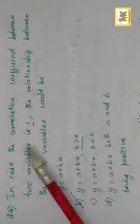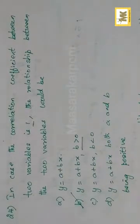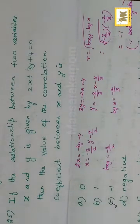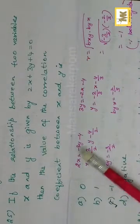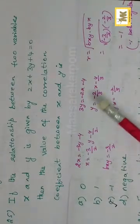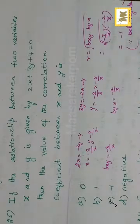Another condition: when r equals 1, bxy and byx — both regression coefficients exist. Rearranging the equation: if X is equal to the equation rearranged, the coefficient of Y gives bxy, which is minus 3 by 2. And Y equals minus 2 by 3X minus 4 by 3.